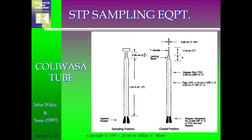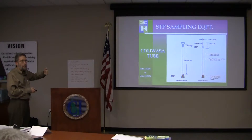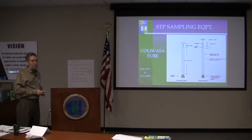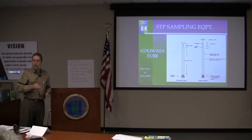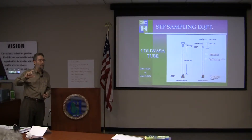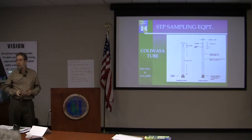The Coliwasa tube is a good example of a correct sampling device. You put this tube into a drum, stick it down, close the bottom, close the top, pull it out, and you have a sample of the whole thing. However, you can still mess it up: if it's a fairly viscous liquid and you slam the tube down, there may be an air gap at the top. So when sampling viscous materials, go slowly. Even correct devices can be a problem if used incorrectly.